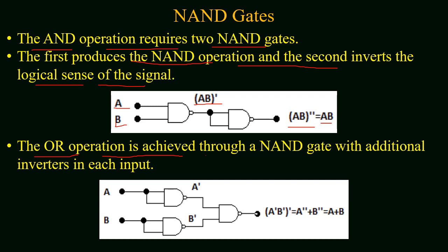The OR operation is achieved through a NAND gate with additional inverters for each input. If we wish to perform A + B using NAND gates, both inputs are first inverted using NAND gates to produce A' and B'. These are fed into a NAND gate, giving (A' · B')', which by De Morgan's law simplifies to A + B — the OR operation.